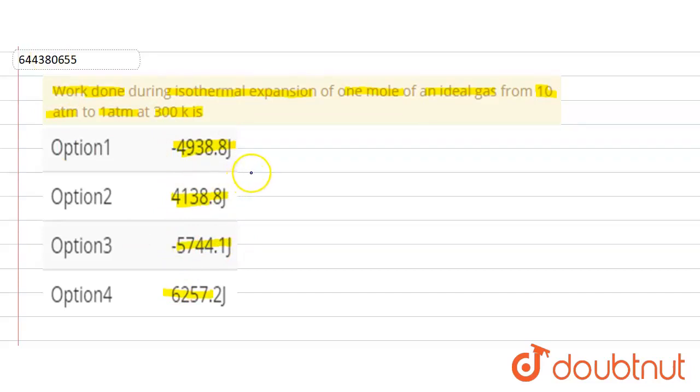So firstly we'll write what we have given. We have given n which is 1, next we have temperature 300 Kelvin, we have pressure values: P1 is 10 atm, P2 is 1 atm.